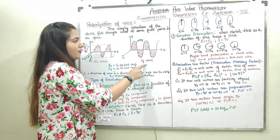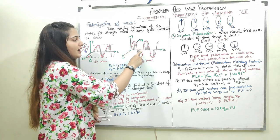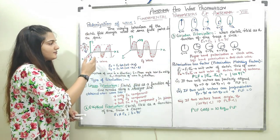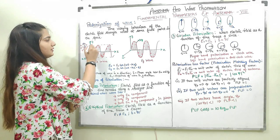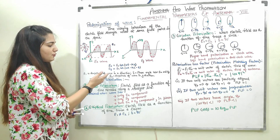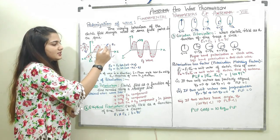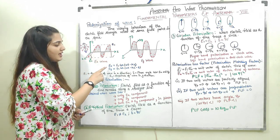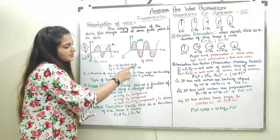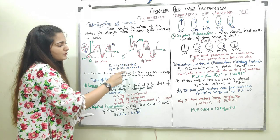The y component has its maxima and minima in the y direction, and it is also moving in the z direction. If I consider the maxima of the x-component to be E1, I can represent this wave as: Ex = E1 cos(ωt − kz), because it is moving in the z direction, which gives us the kz term.